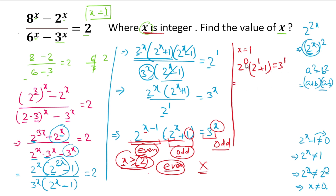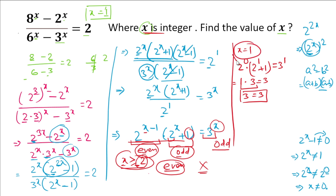So left-hand side equals 3 and right-hand side equals 3. The equation is satisfied, confirming x = 1 is a valid solution.